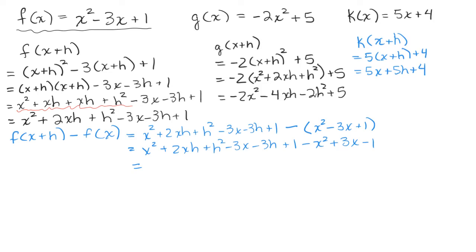The last step is to combine like terms. X squared minus X squared is 0. The 2XH has no like terms. The negative 3X and the positive 3X cancel. The plus 1 and the negative 1 cancel. So our final answer is 2XH plus H squared minus 3H.